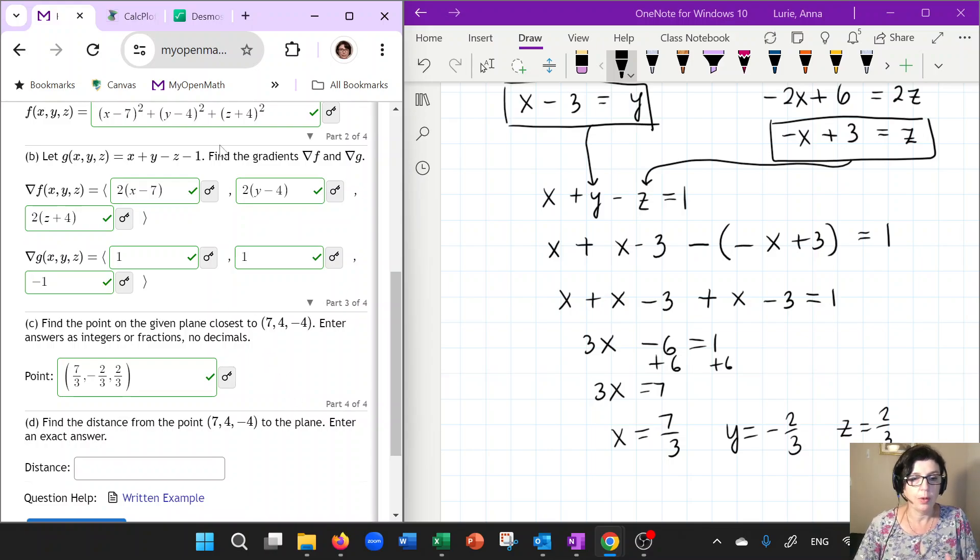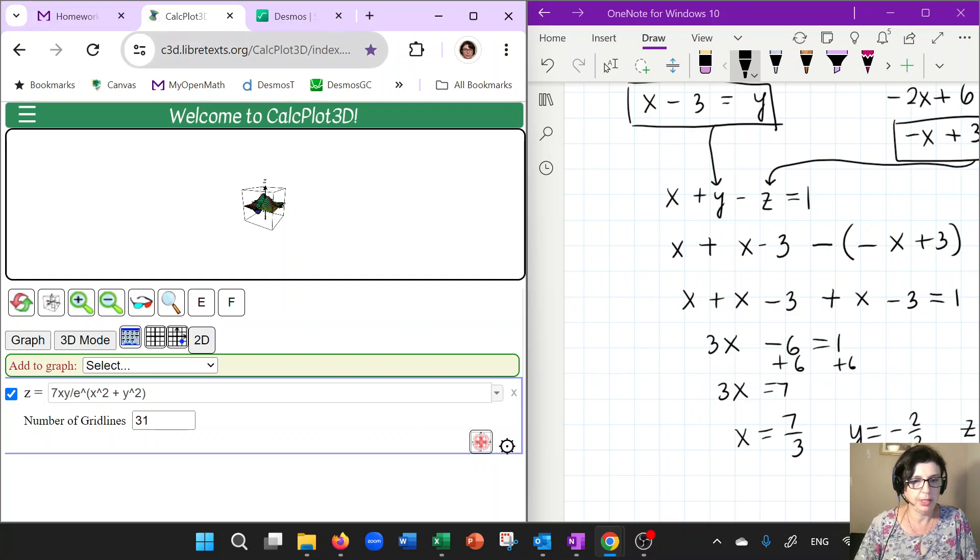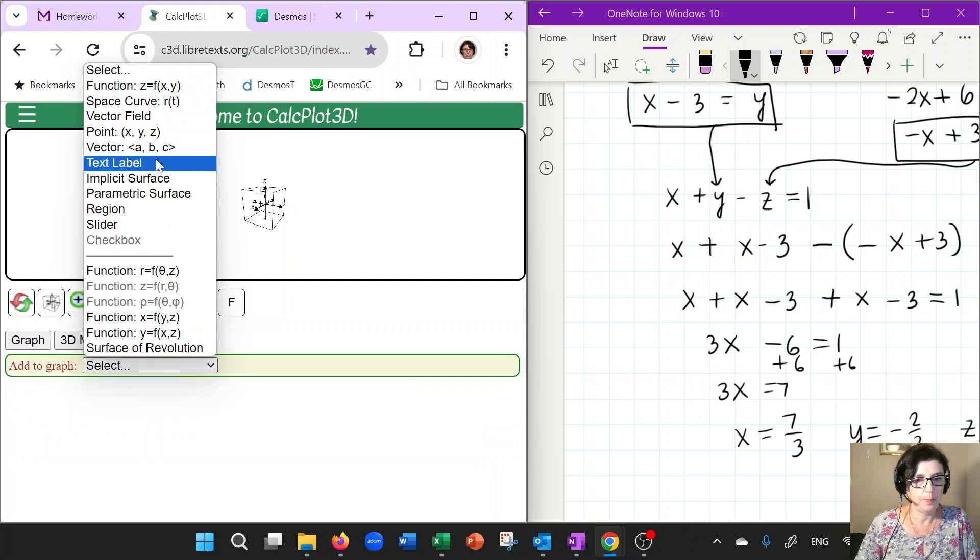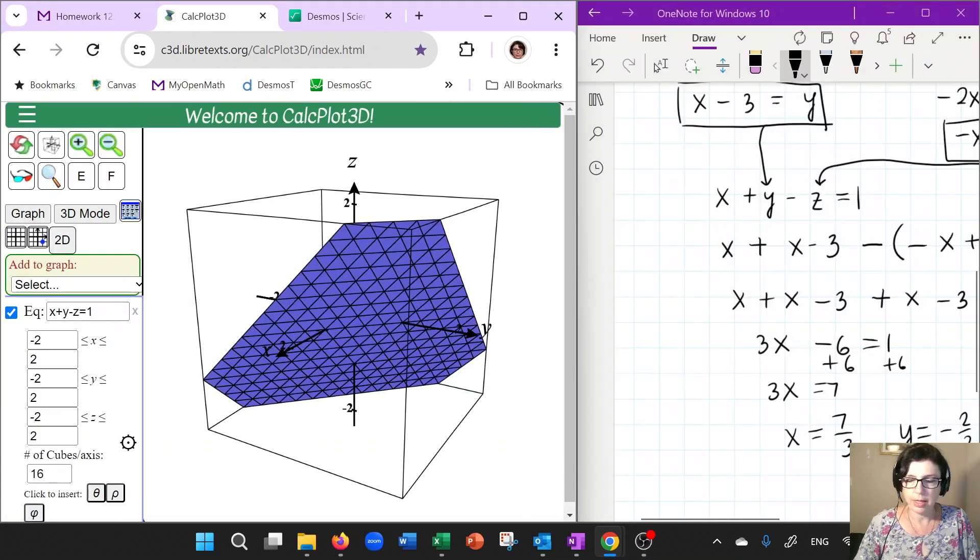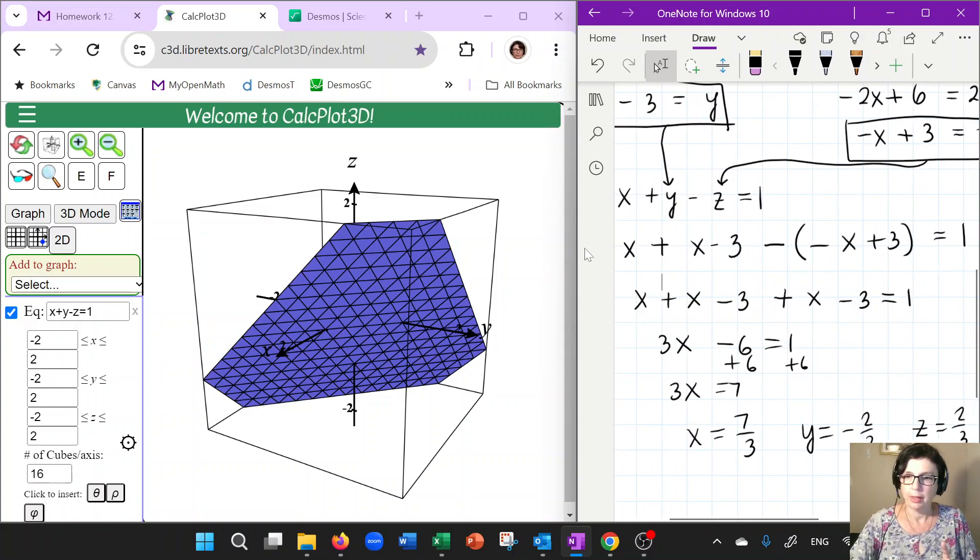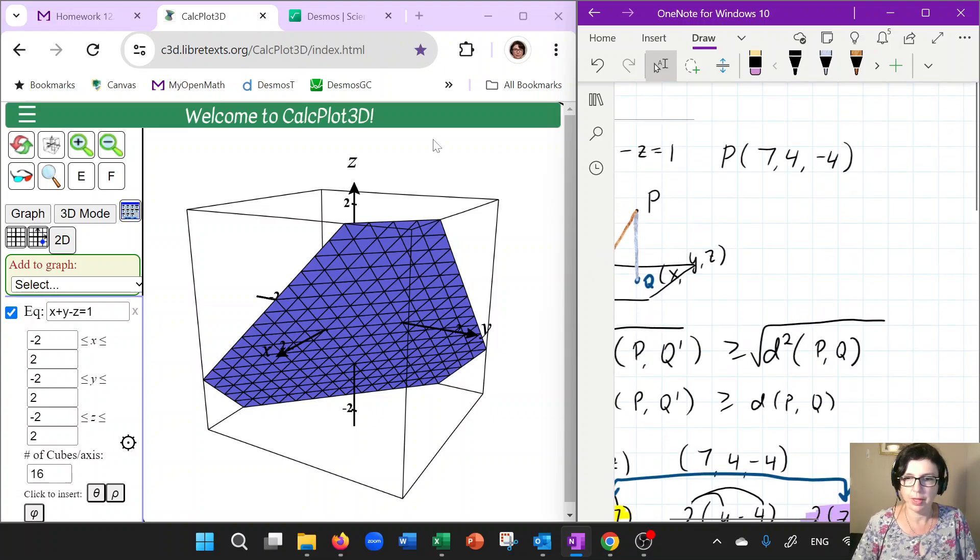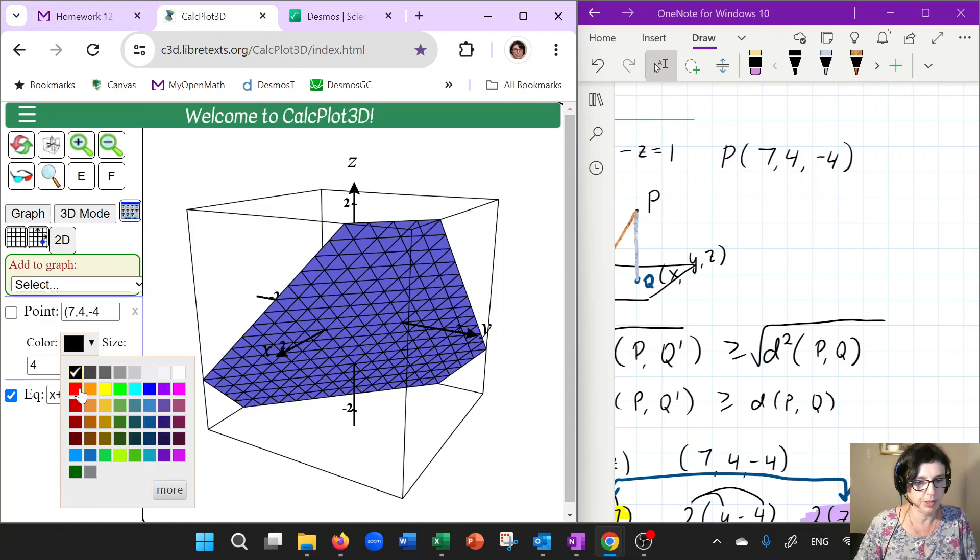So now, what does this mean geometrically? Does this make sense? So here I have this CalcPlot 3D. And I'm going to show you if I were to actually get rid of this plot, and then just add an implicit surface here, and enter that plane, X plus Y minus Z equals 1. And so this is the plane. And then I want to add that point that I get the 7 thirds, where is it on the plane? But first of all, let's start with the point that we were trying to find the distance of that was 7, 4 and negative 4. So let's add that to the plot. So this is 7, 4, negative 4. I want you to have like a visual representation of what the heck I'm doing.